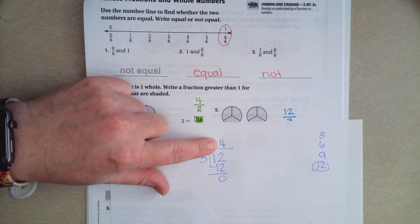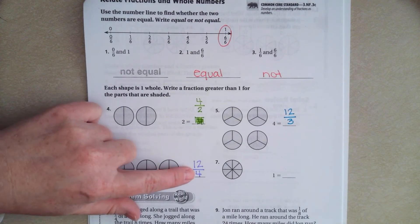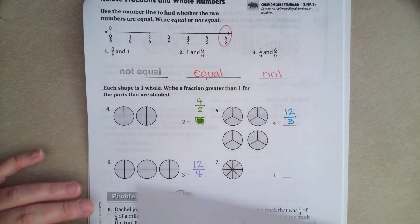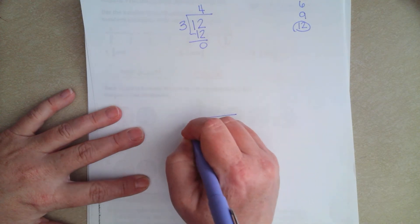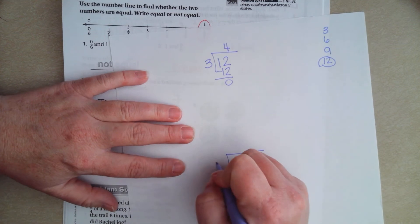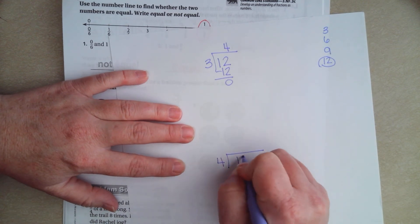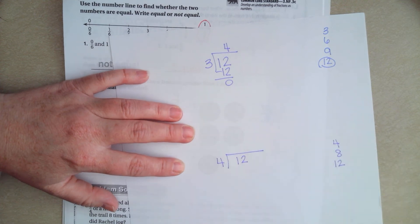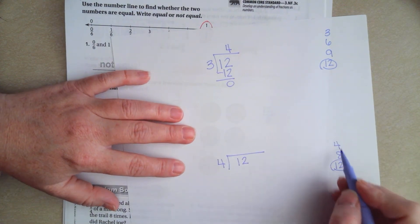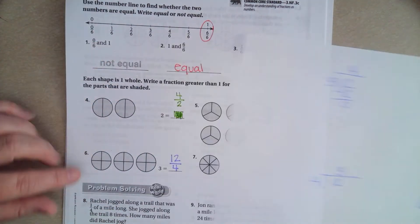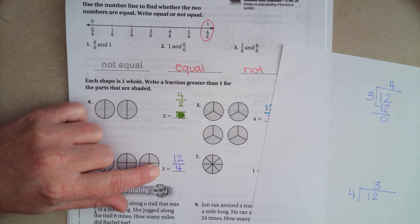When I did my division, I did 4, right? I cut it up into 4's. So when I have a denominator of 4, and I put it into 12, there's my 12, I went 1, 2, 3 times. 3.